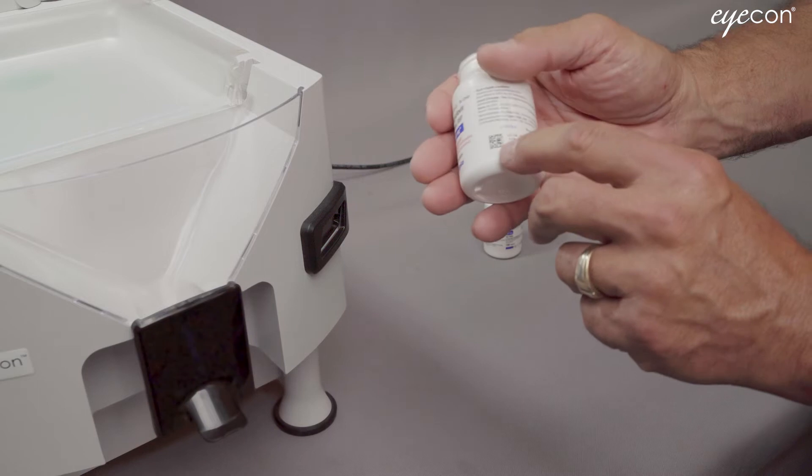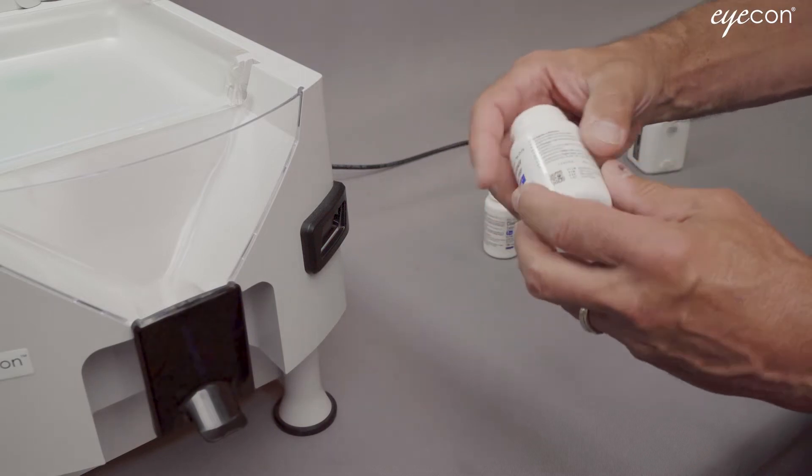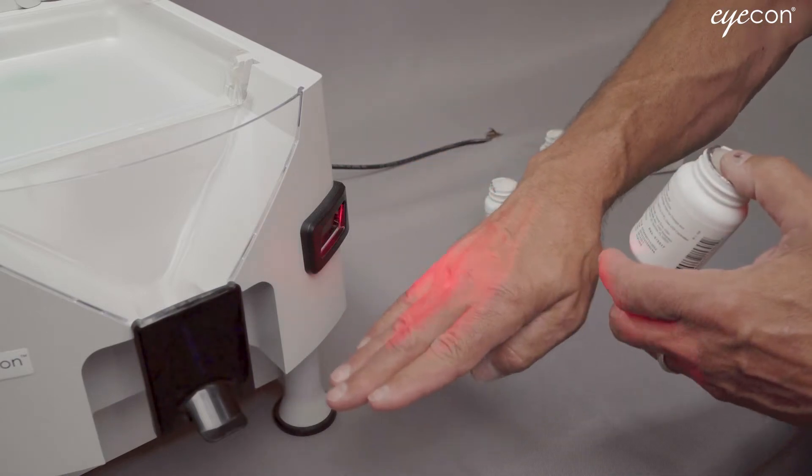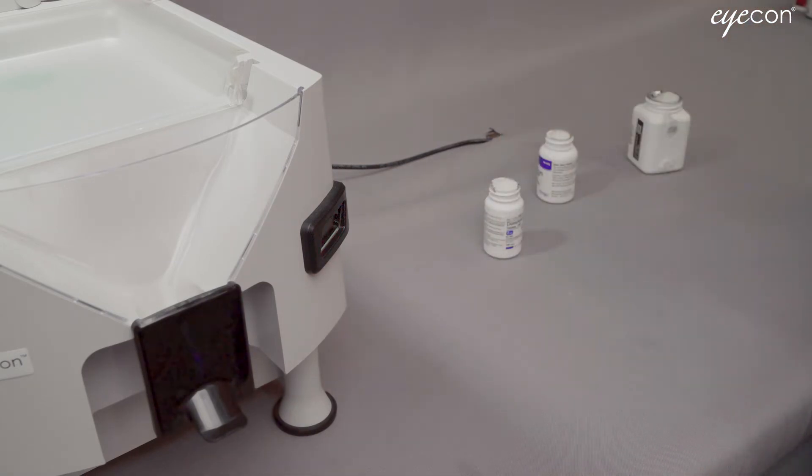Here's an example of a fairly small 2D barcode on this Valacyclovir. To scan this, point the red dot on the scanner beam so it's centered on the barcode and it should scan very quickly.